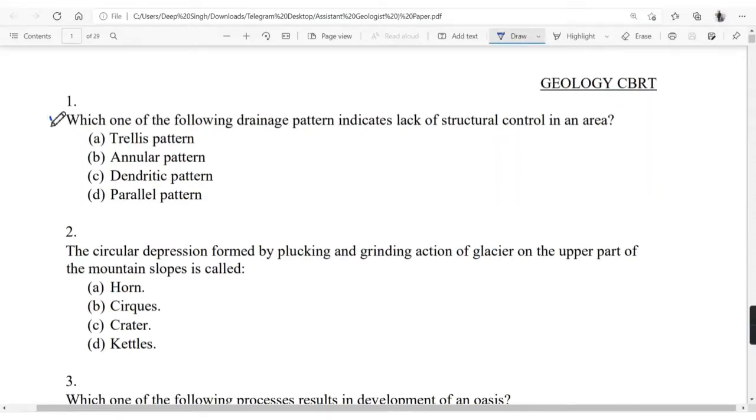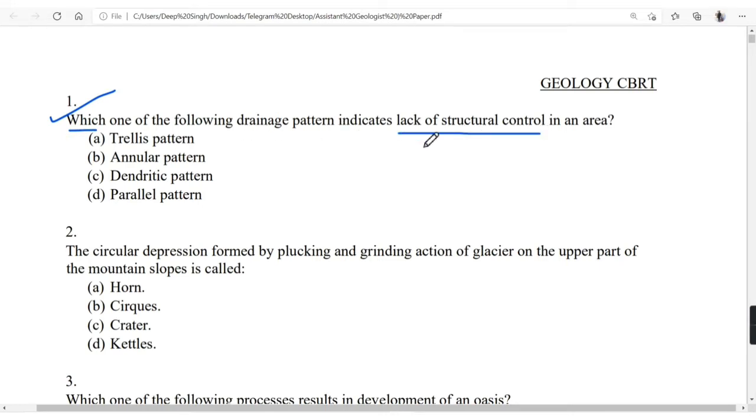Good morning to all, welcome back to my YouTube channel, this is Sangeeta. Today I will solve the assistant geology 2016 question paper. Which of the following drainage pattern indicates the lack of structural control in an area? It is clearly dendritic pattern. It will look like branches of a tree, so dendritic pattern will lack any structural control in the area.